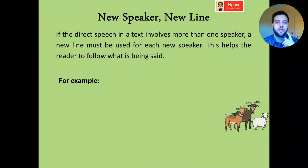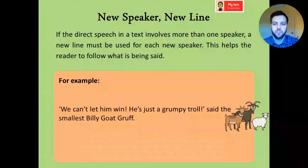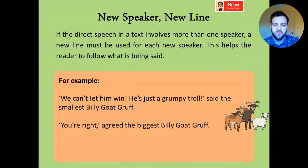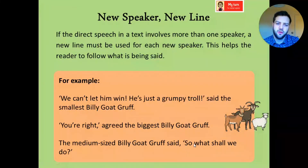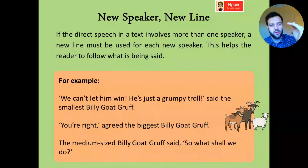Another little bit to remember is something called new speaker, new line. If the direct speech in a text involves more than one speaker — so there are two people talking — a new line must be used for each new speaker. This helps the reader to follow what is being said. For example: 'We can't let him win. He's just a grumpy troll,' said the smallest Billy Goat Gruff. The next line starts for the next speaker: 'You're right,' agreed the biggest Billy Goat Gruff. The medium-sized Billy Goat Gruff said, 'So, what shall we do?' There's a different line for each one, which helps the reader go from one person to the next.